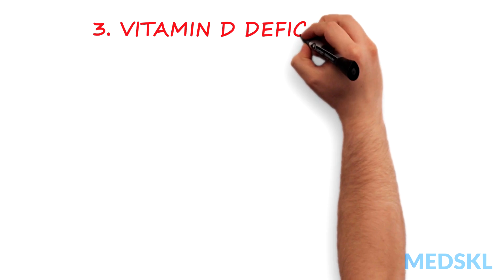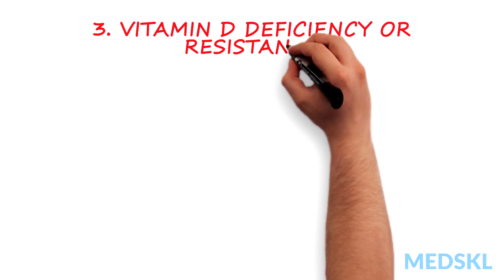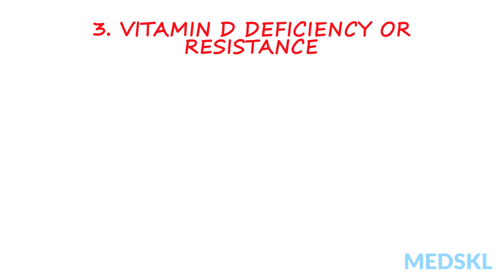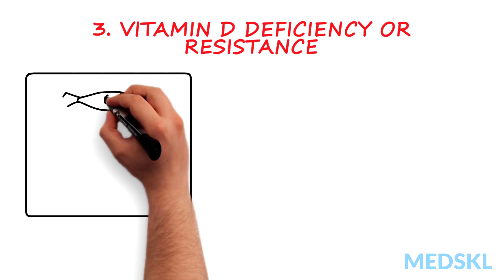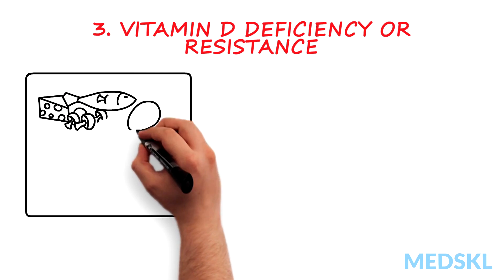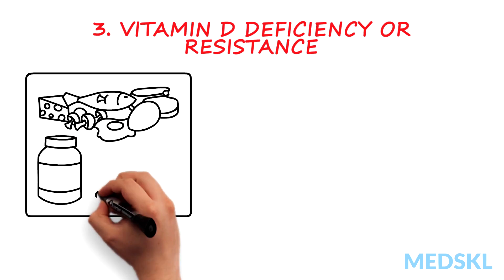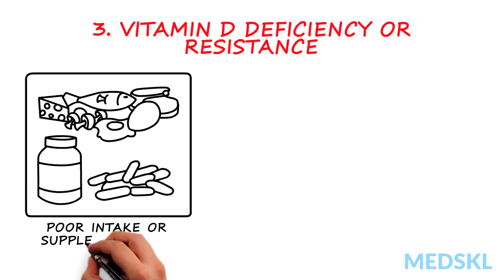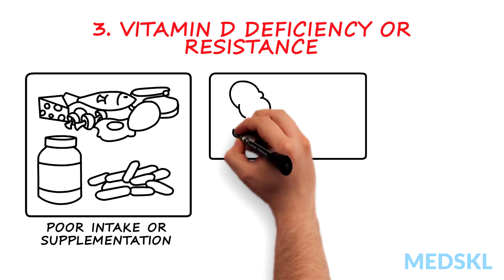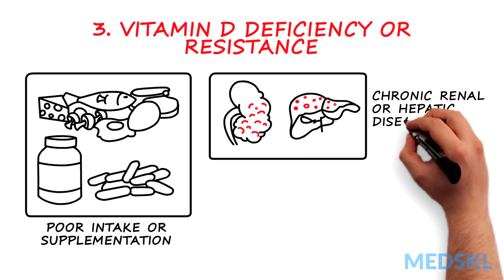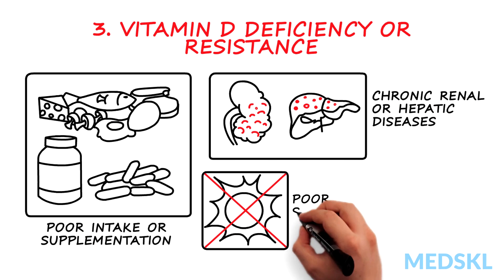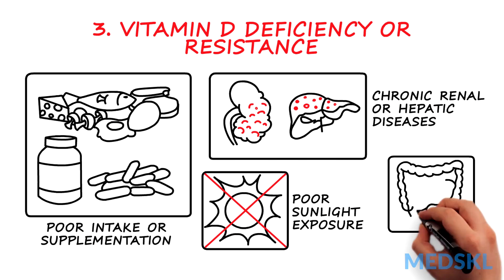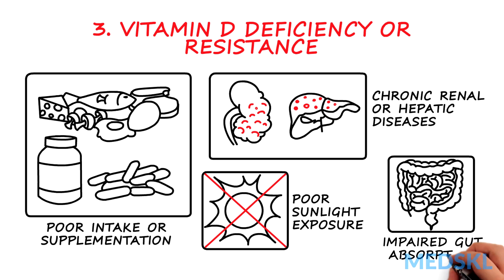Vitamin D deficiency or resistance. Vitamin D is a necessary cofactor in PTH activity. Vitamin D deficiency is usually due to poor dietary intake or supplementation, chronic renal or hepatic disease, poor sunlight exposure, or impaired gut absorption.